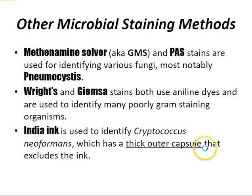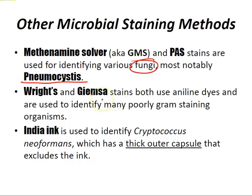Other microbial staining methods include methenamine silver (GMS) and PAS (periodic acid-Schiff) stains, used for identifying various fungi, most notably Pneumocystis. The Wright and Giemsa stains both use aniline dyes and are used to identify many poorly gram-staining organisms like Rickettsia, Chlamydia, Borrelia, Plasmodium, and Toxoplasma. The Indian ink stain is used to identify Cryptococcus neoformans, which has a thick outer capsule that excludes the ink.